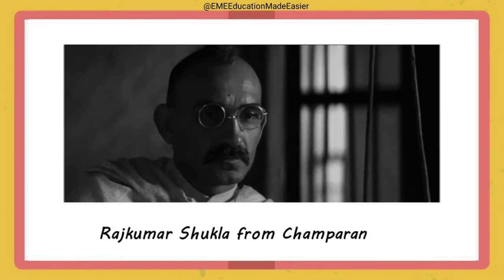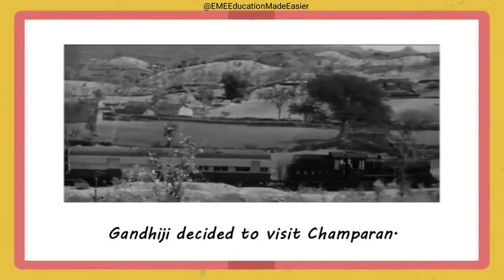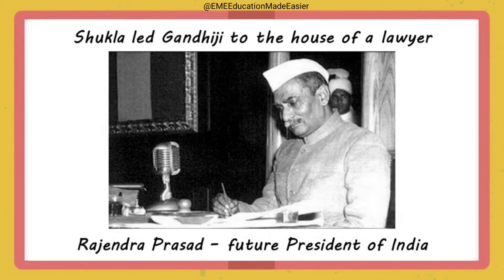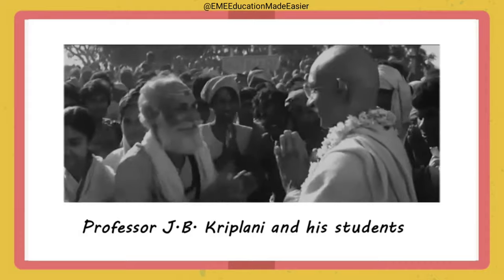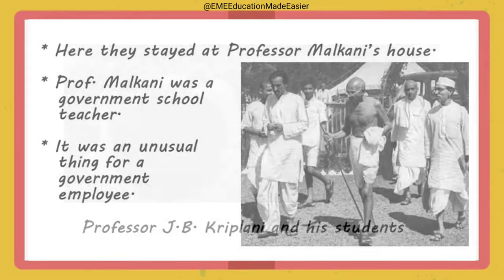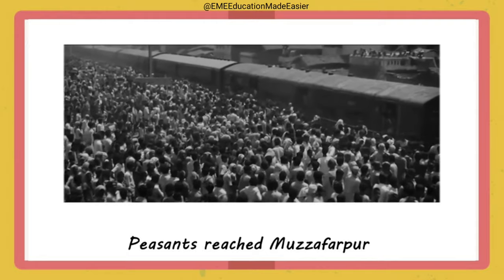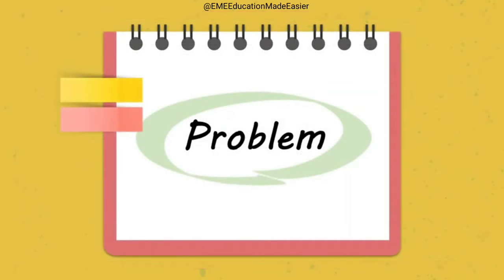Gandhiji had prior commitments and could not go with Shukla, but the indigo cropper was so persistent that he stayed with Gandhiji and kept following him. Finally Gandhiji decided to accompany him to Champaran. Both reached Patna and stayed at the house of Rajendra Prasad — who later became the president of India. Then they moved to Muzaffarpur, where Professor J.B. Kripalani and his students came to receive them. Gandhiji stayed at the house of Professor Malkani, a government school teacher — unusual because government employees would normally stay away from congressmen. News of Gandhiji's arrival spread and peasants reached Muzaffarpur hoping for a solution to their plight.